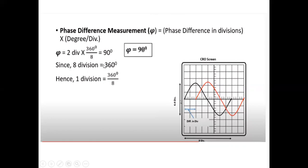Since 8 divisions equals 360 degrees — counting 1, 2, 3, 4, 5, 6, 7, 8 — 8 divisions are required to complete 1 cycle, and 1 cycle is 360 degrees, as already known. Therefore, degrees per division = 360 / 8 = 45 degrees. Then 2 × 45 = 90 degrees. This is the phase difference between the two waveforms.